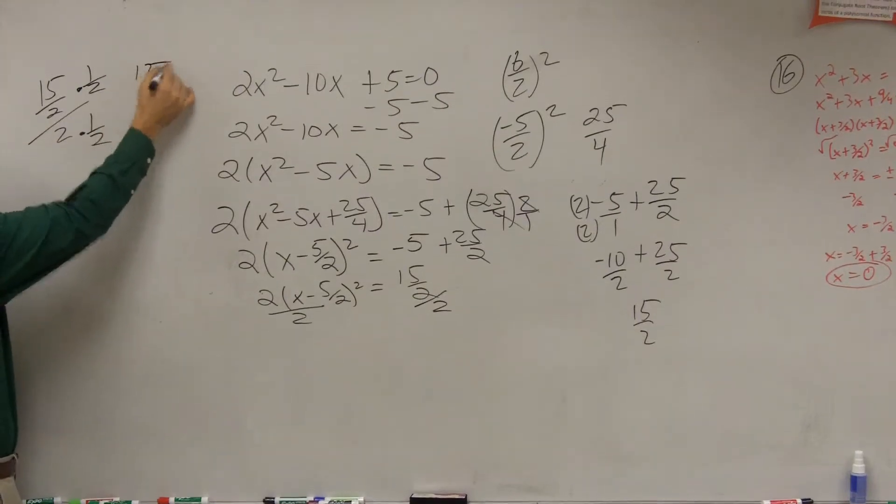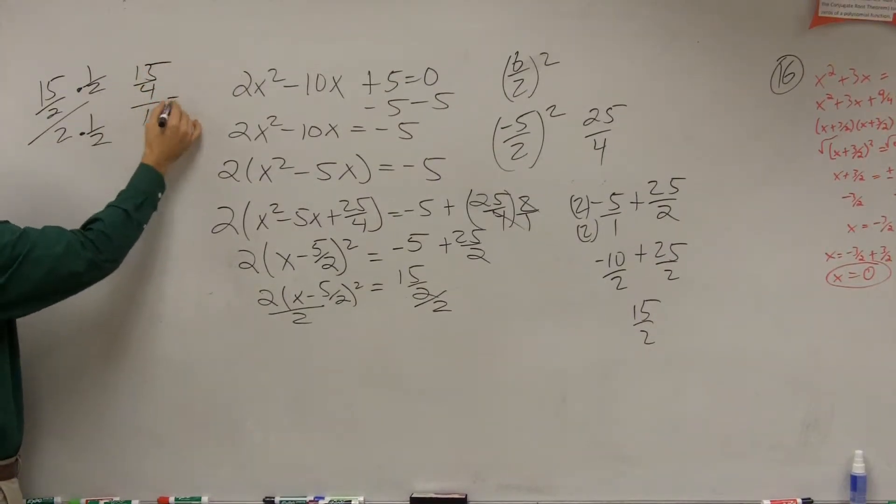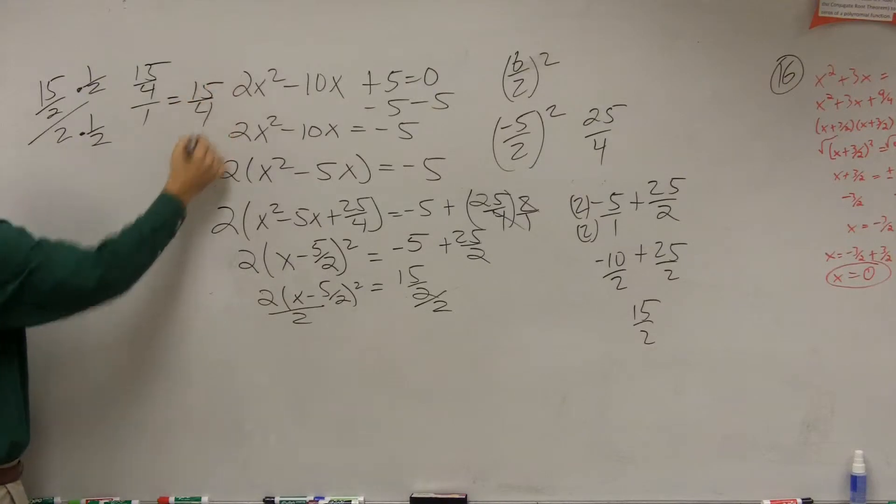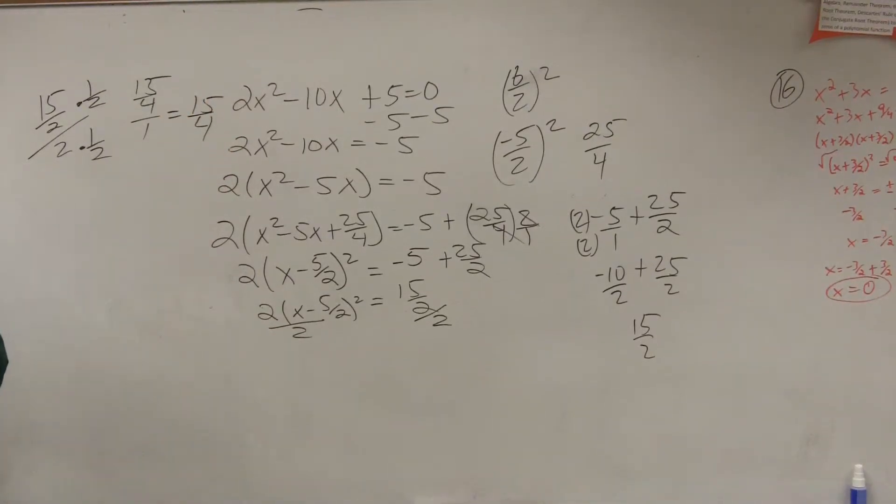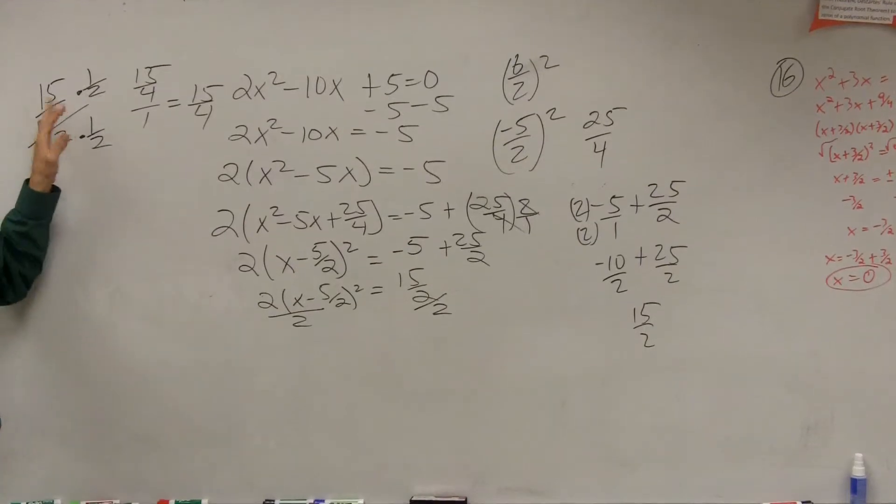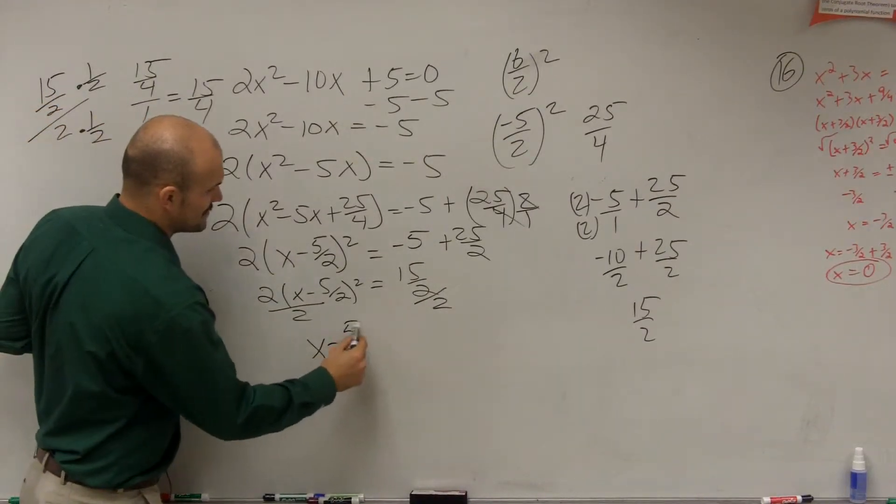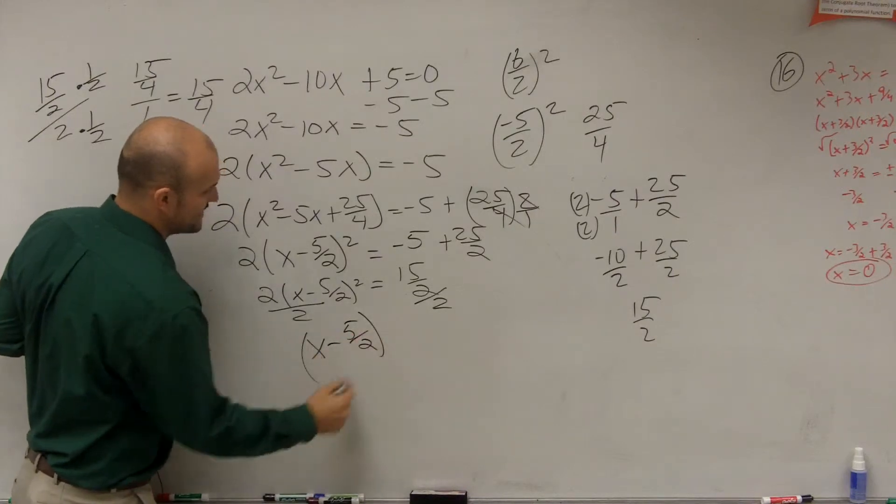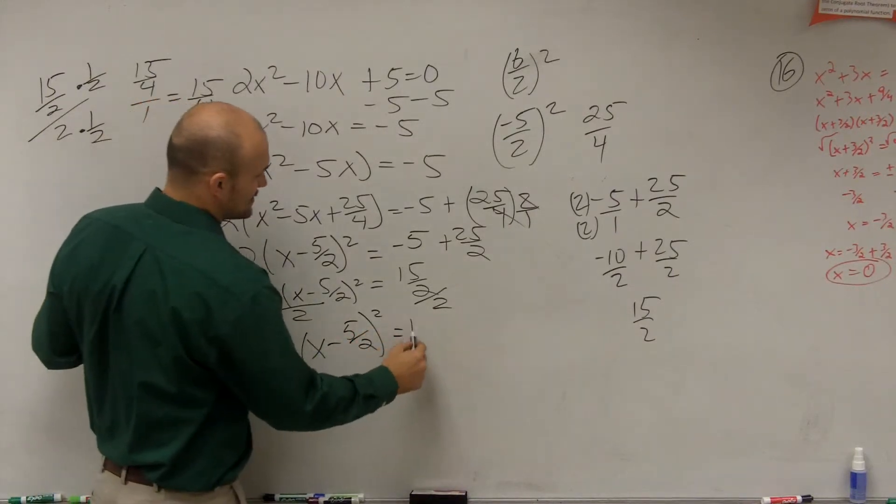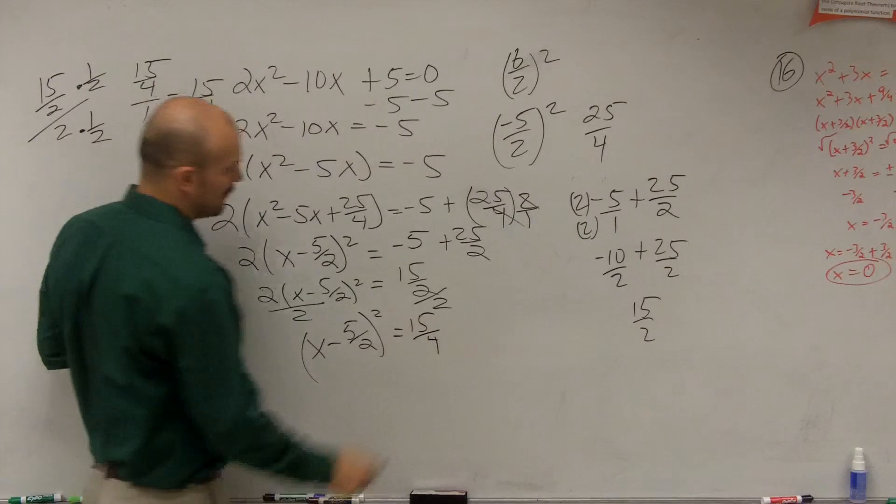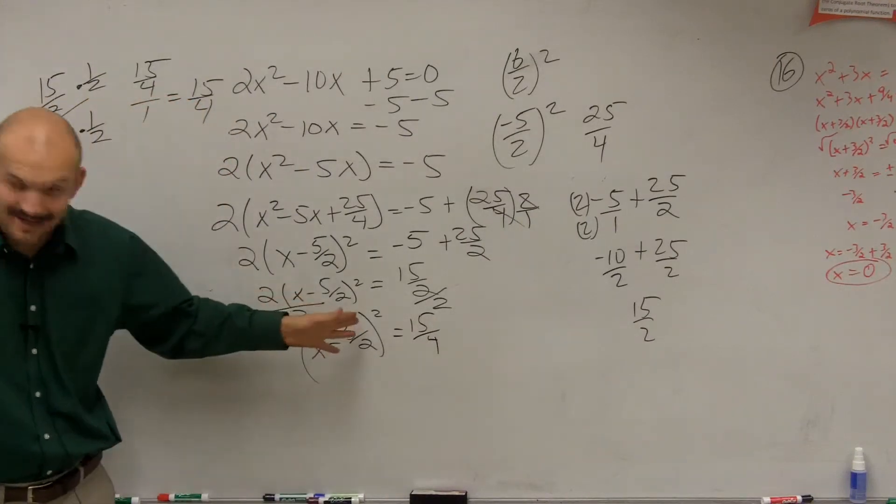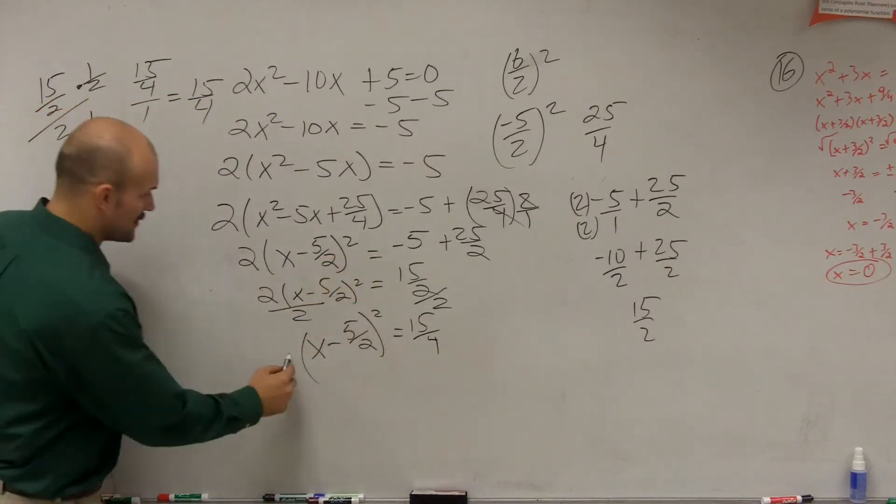But you've got to make sure you multiply by the reciprocal on the top and the bottom. So therefore, you'd have 15 divided by 4 divided by 1, which is 15 just divided by 4. You guys are going to have to do this a lot, so hopefully you get used to it.